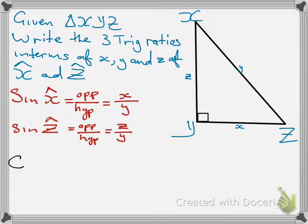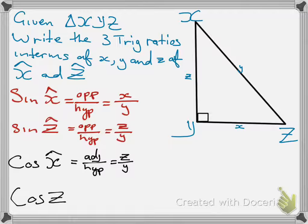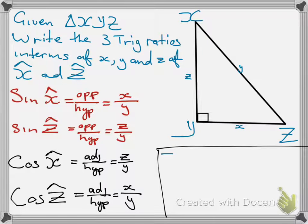And then, the cosine ratios. Cos of angle X will be equals to adjacent all over hypotenuse, which is equals to side Z all over side Y. And then, cos of angle Z will be equals to the adjacent over hypotenuse, which is equals to X all over Y. So, the adjacent side is X and hypotenuse is Y.